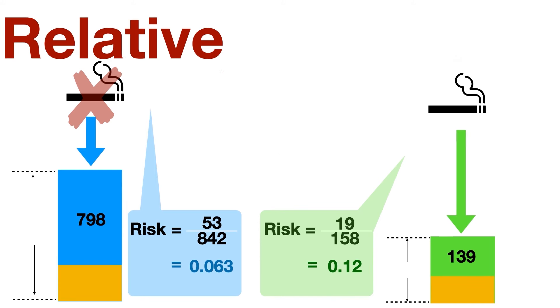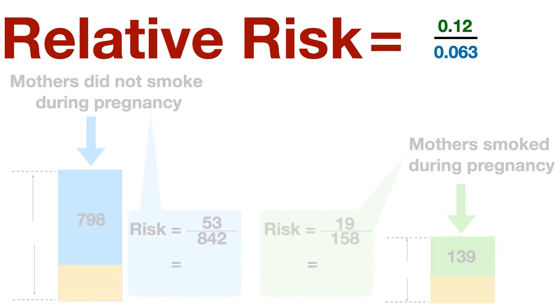To calculate the relative risk, we take the risk in the exposed group and we divide it by the risk in the unexposed group. So that's 0.12, 12 percent, divided by 0.063, 6 percent, and we get a relative risk of 1.9. That's nearly two. In other words, smoking during pregnancy nearly doubles your risk of having a low birth weight baby.